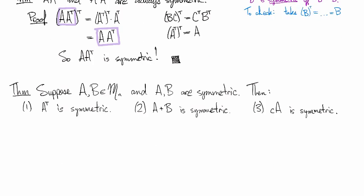I'm going to go ahead and prove the second part. This is about showing that A plus B is symmetric. So what we just saw is that we need to take the thing that we want to verify as symmetric and take its transpose.